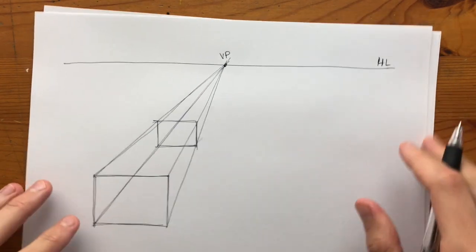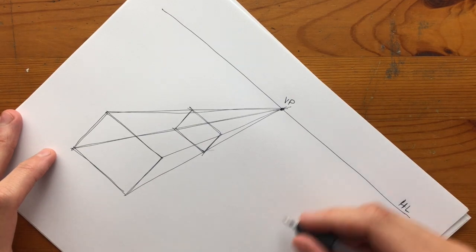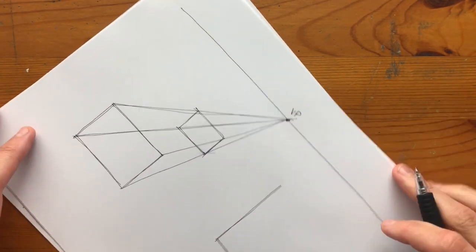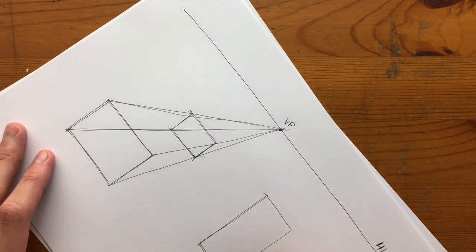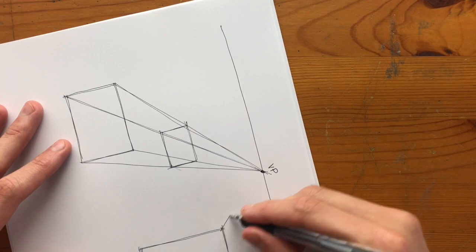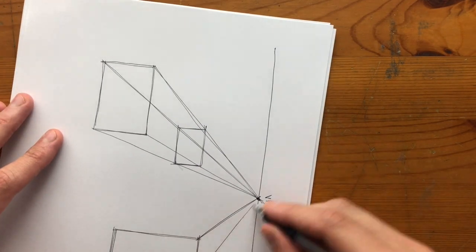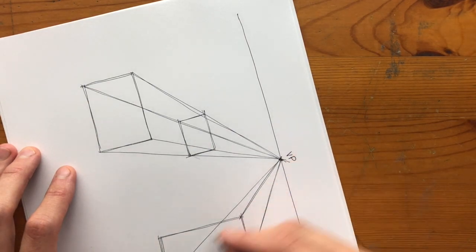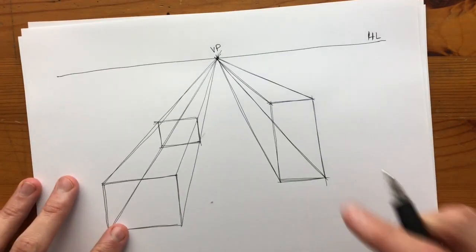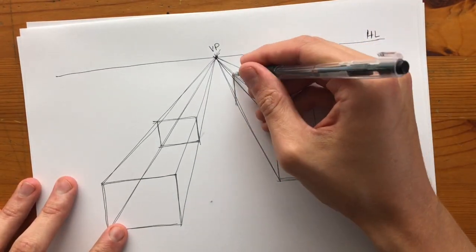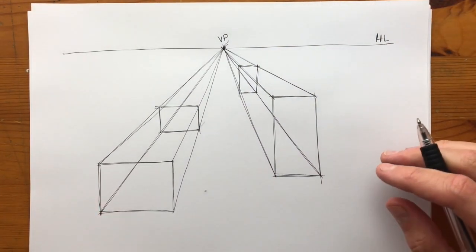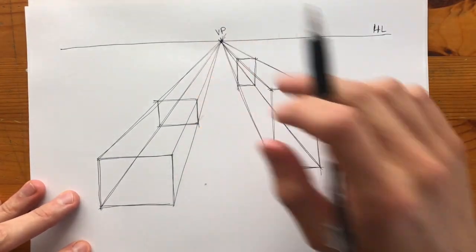You can repeat this again with a different shape, maybe a little bit of a different location. So here's our box up there. And do the same thing by adding another rectangle. Now you see that all of these lines are converging into this point.